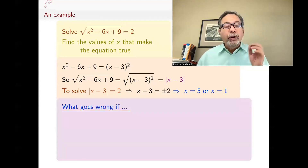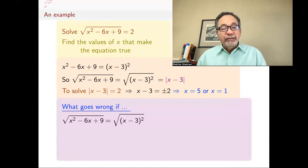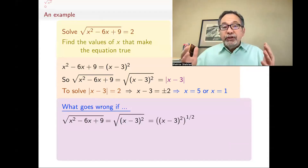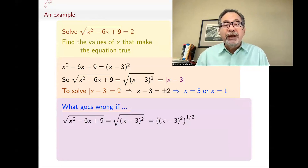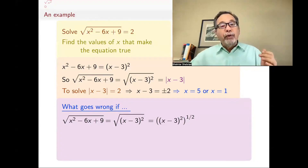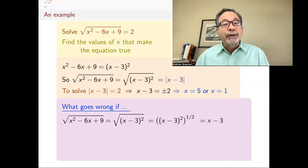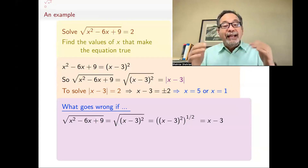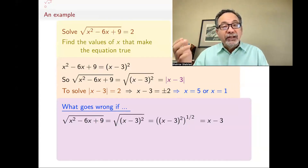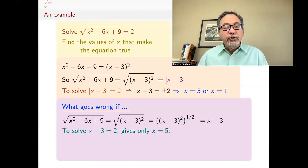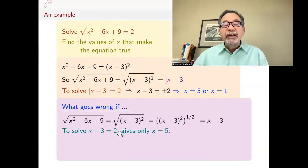Now the cautionary tale. What if I said: square root of x squared minus 6x plus 9 is square root of x minus 3 squared. Square root of something is the same as that thing to the power 1 half — that is a definition. So square root of x minus 3 squared is x minus 3 squared all raised to the power 1 half. And by the power rule — power of a power, you multiply — that's x minus 3, because 2 times 1 half is 1, and x minus 3 to the power 1 is just x minus 3. Then I'd want to solve x minus 3 equals 2 and get x equals 5.